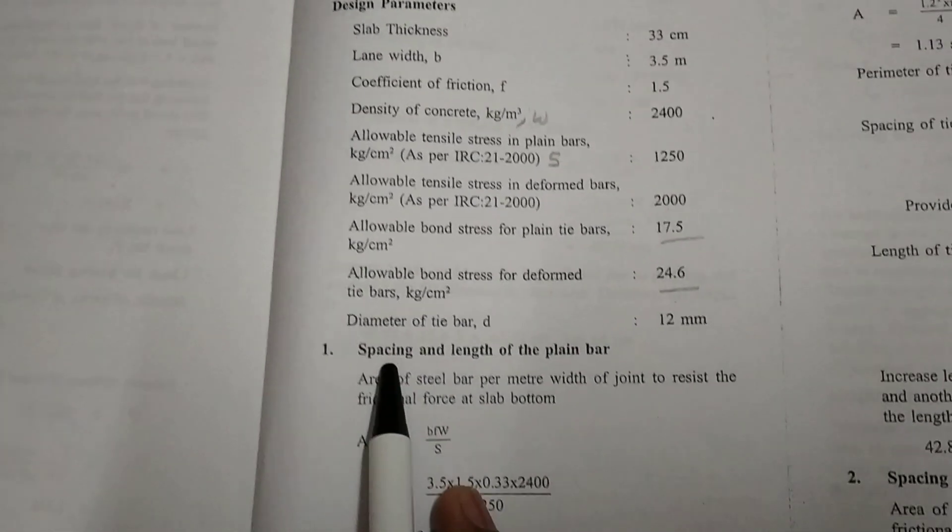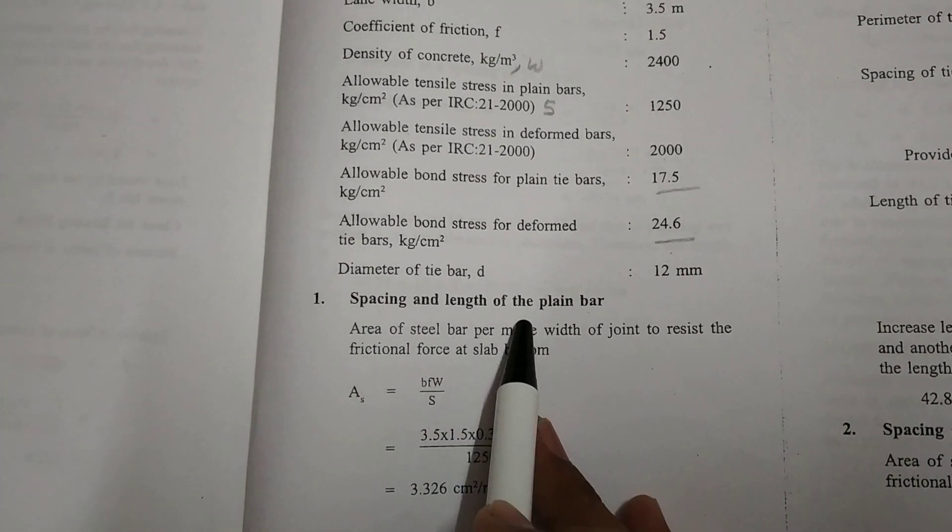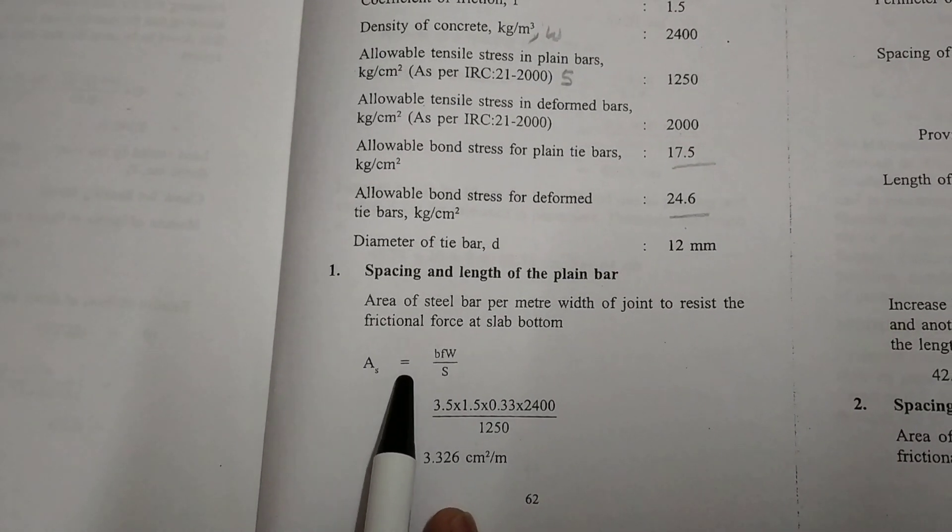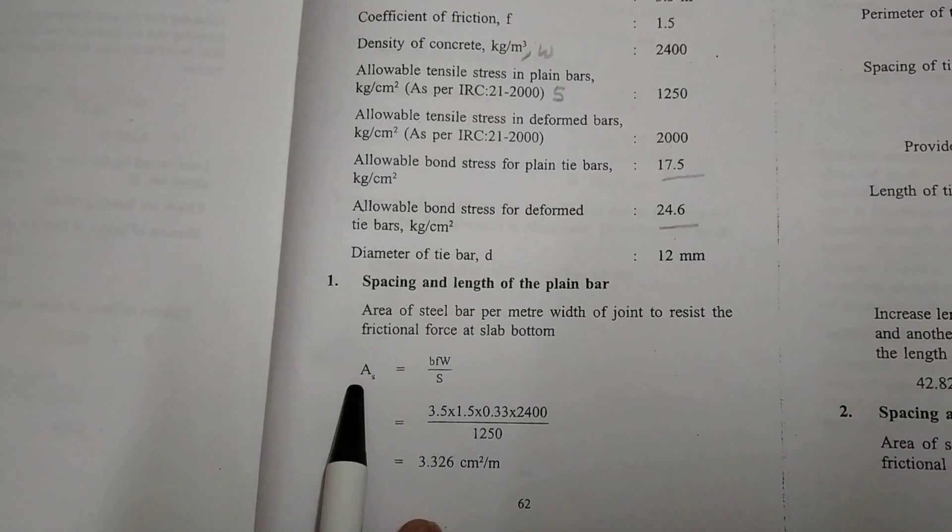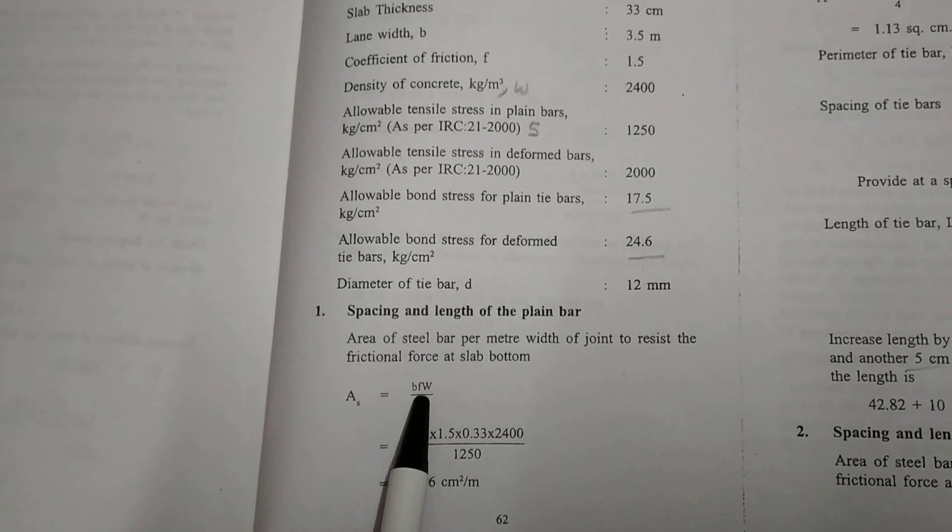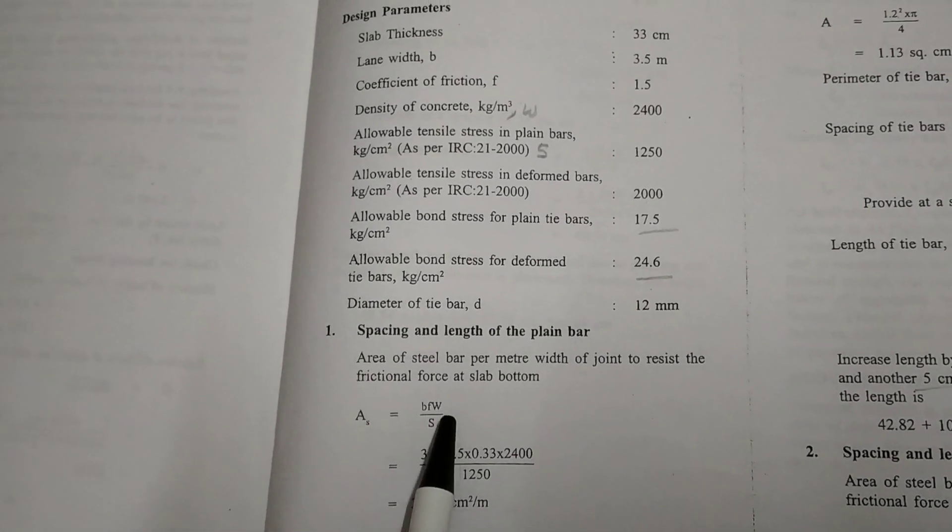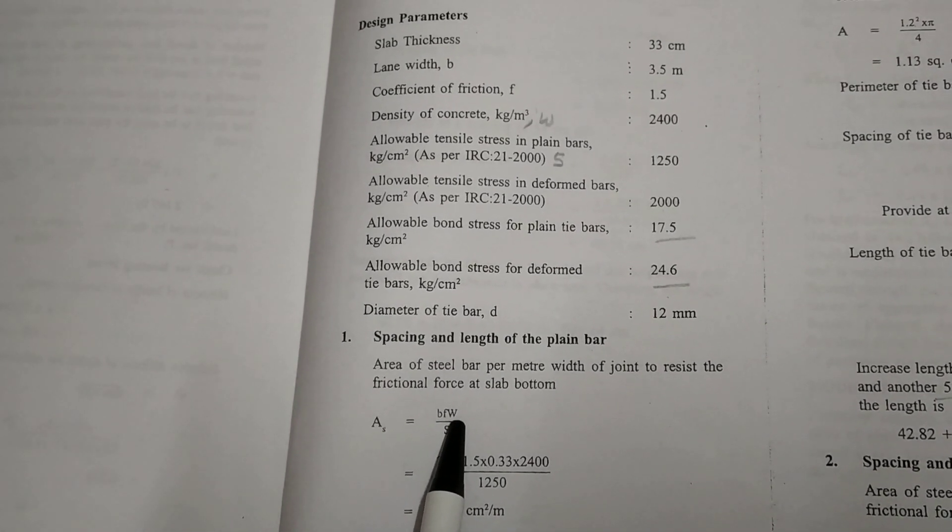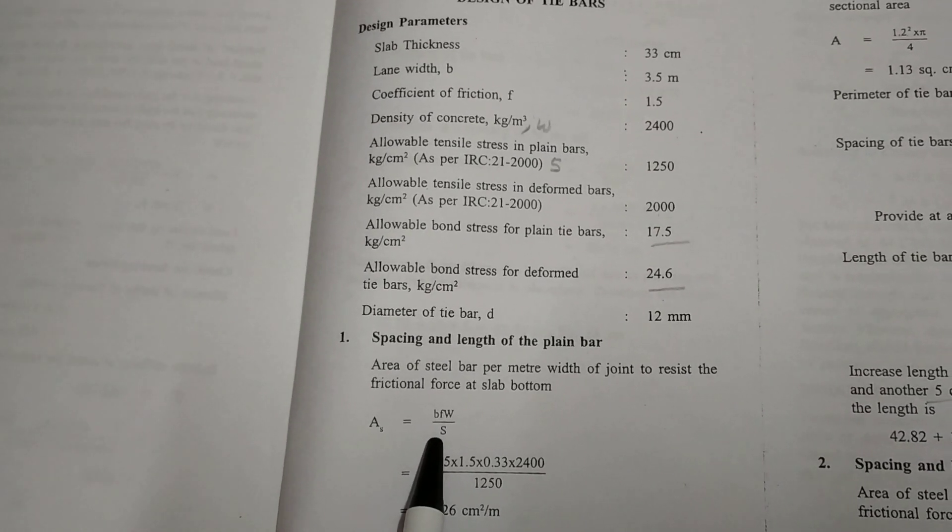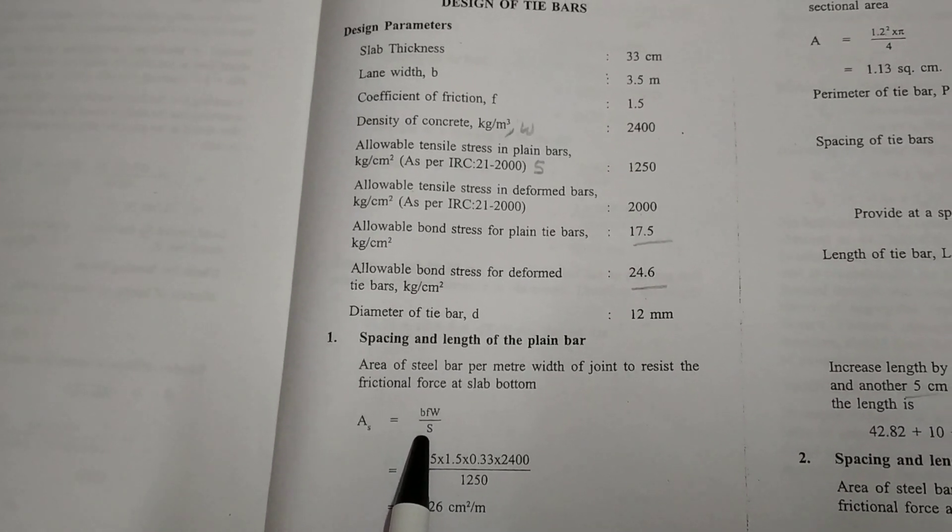Now we want to calculate spacing and length of the plain bar. Here is given the formula A equals BFW divided by S. A is the area of steel, B is length width, F is coefficient of friction, W is density of concrete divided by allowable tensile strength in plain bars.